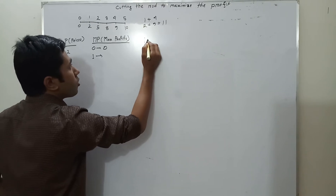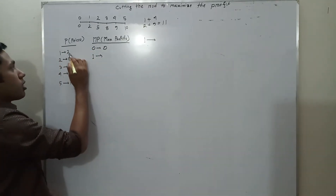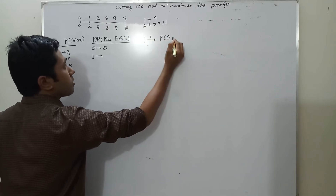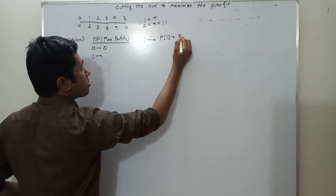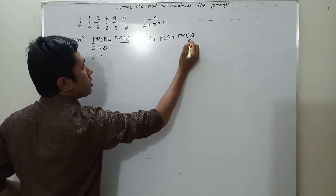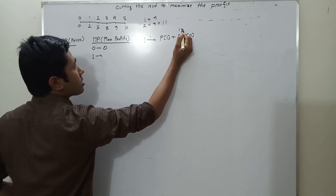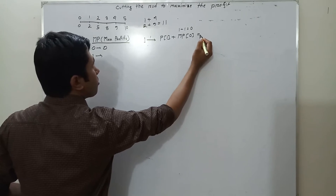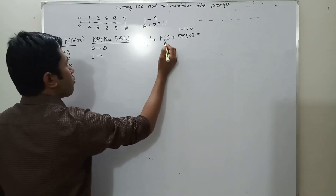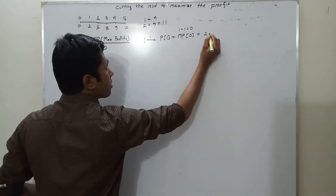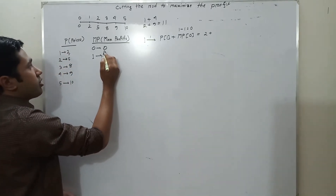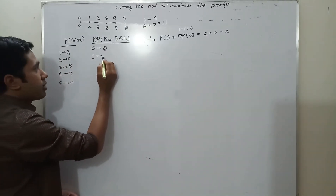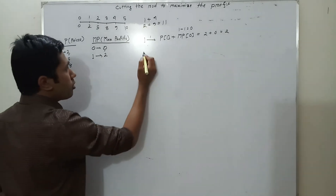Now we will find the max profit for a 1-length rod. We can use only one combination: for size 1, the price of 1 plus the max profit of the remaining length. Total length 1 minus used length 1 equals remaining length 0. So max profit for 1-length rod equals price of 1 (which is 2) plus max profit of 0 (which is 0), equal to 2.